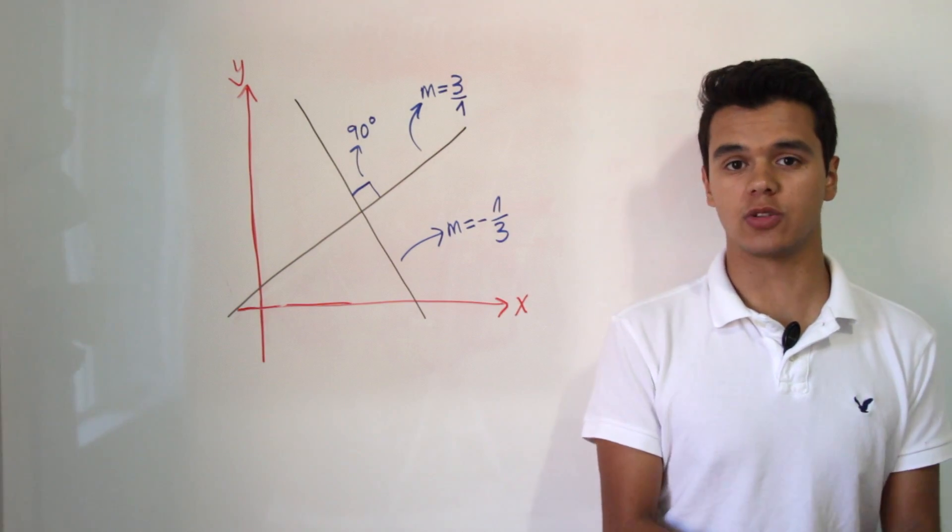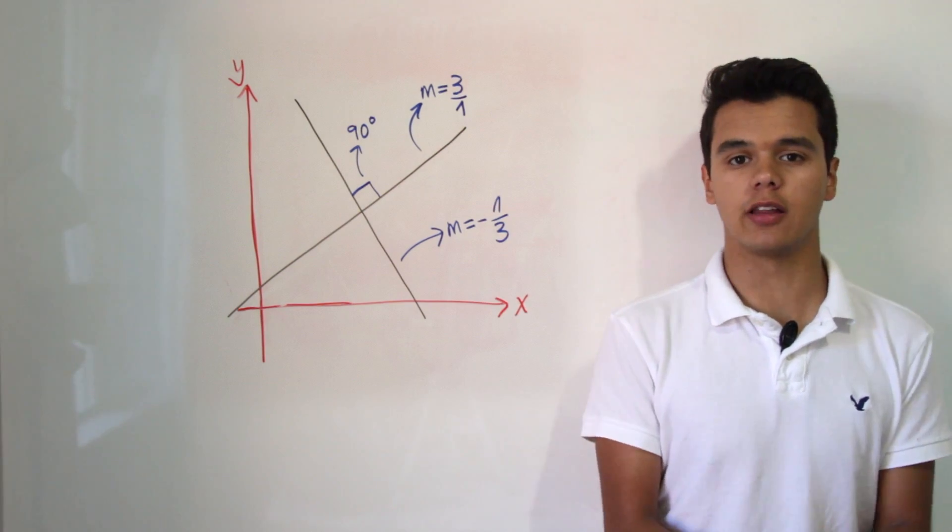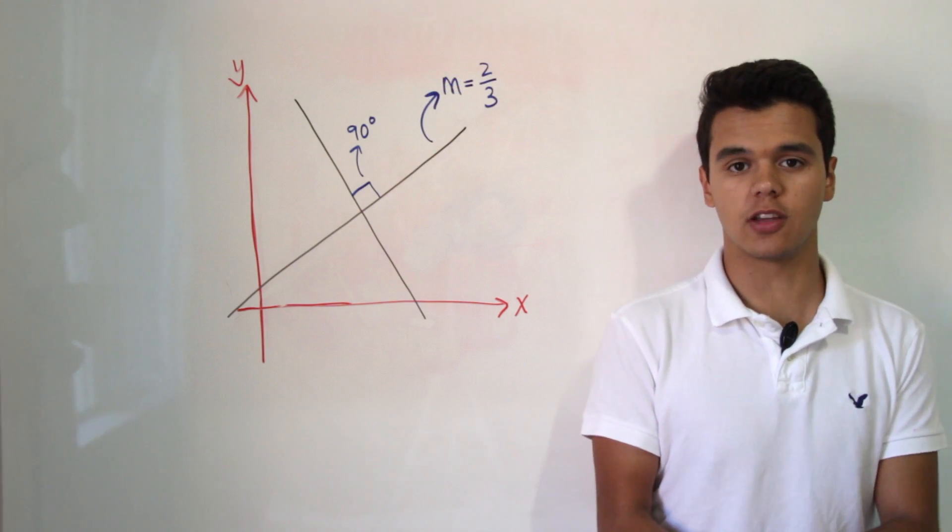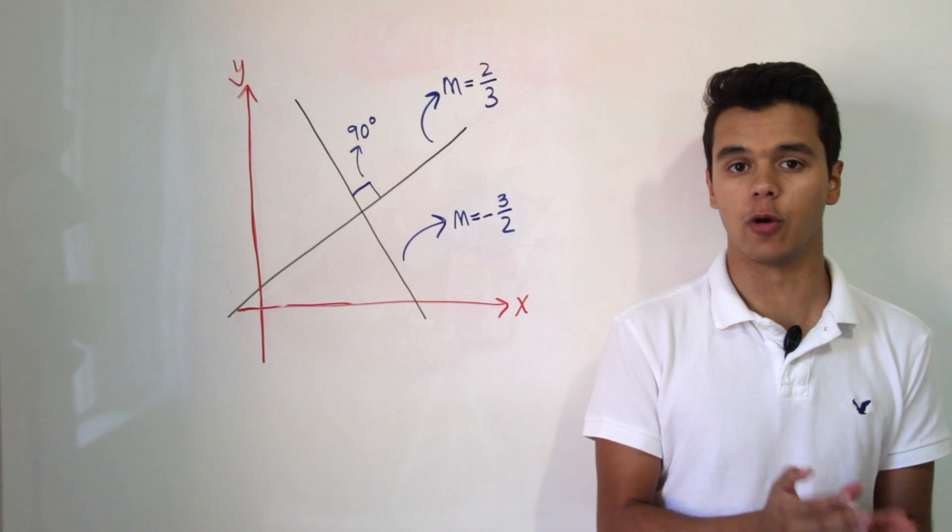And the good thing is that it always works. So for example, if we have a line that has a slope of 2 thirds, then the perpendicular line is gonna have a slope of negative 3 over 2.